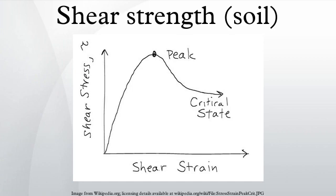Steady state: a refinement of the critical state concept is the steady state concept. The steady state strength is defined as the shear strength of the soil when it is at the steady state condition — that state in which the mass is continuously deforming at constant volume, constant normal effective stress, constant shear stress, and constant velocity. Steve J. Poulos, then an associate professor of the soil mechanics department of Harvard University, built off a hypothesis that Arthur Casagrande was formulating towards the end of his career. Steady state based soil mechanics is sometimes called Harvard soil mechanics. The steady state occurs only after all particle breakage is complete and all particles are oriented in a statistically steady state condition, so that the shear stress needed to continue deformation at a constant velocity does not change.